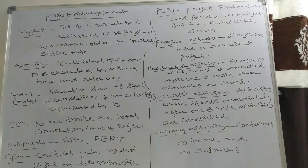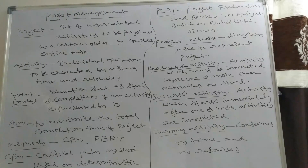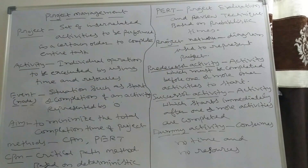The difference between CPM and PERT may be asked as a question: CPM is based on deterministic times; PERT is based on probabilistic times. That is the main difference.